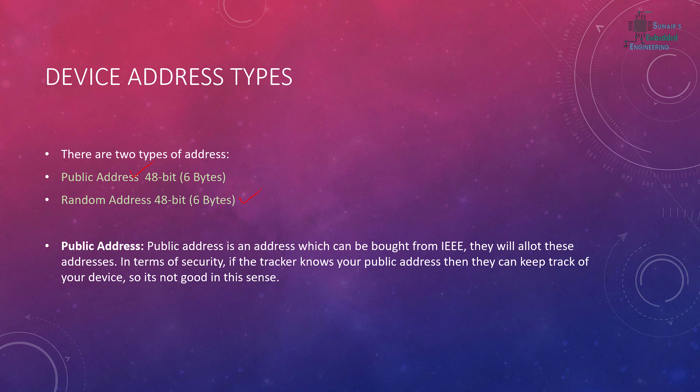The public address is one that can be bought from IEEE. IEEE will allocate a 48-bit address — 24 bits are assigned by IEEE and the next 24 bits are assigned by you for your devices. In terms of security, if someone knows your public address they can track your device, which is a security concern. To buy a public address, refer to the IEEE website.